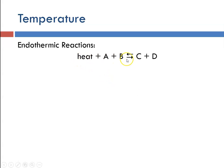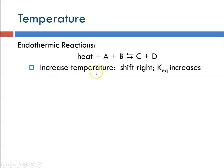In an endothermic reaction, heat is on the reactant side because we need to add heat to get it to react. An increase in temperature will shift the equilibrium toward the right, toward the formation of products, because that would reduce the stress to re-establish equilibrium. So if shifting to form more products, the value of Keq will increase because products are in the numerator of the Keq expression.